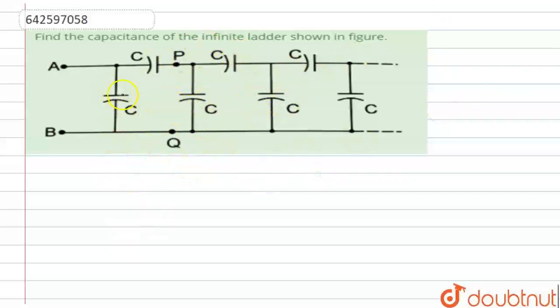The capacitance between A and B from here. It's a very big ladder, right? All the capacitors are the same here. So let us suppose, let us cut the total ladder from this point to here.